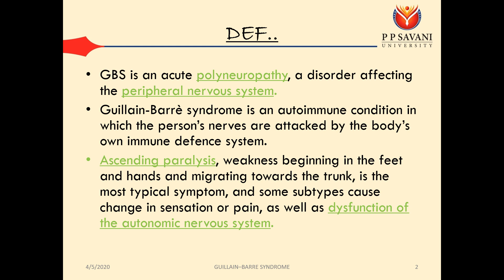GBS is a polyneuropathy where many nerves are affected, mainly starting from the feet and hands and moving upwards. From the feet it goes to the knees, to the hip, to the trunk. From the hand it goes to the elbow, to the shoulder, and affects the trunk. This is termed ascending paralysis. It can also cause dysfunction of the autonomic nervous system, including cardiac arrhythmias, which are a leading cause of death from GBS. It is mostly a reversible condition, but can still cause death.